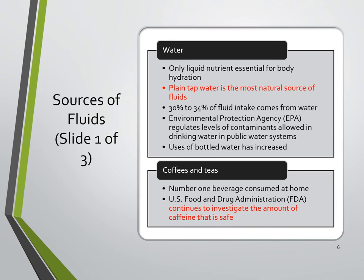Coffee is actually the number one beverage consumed at home. Along with tea, the FDA continues to investigate the amount of caffeine that is safe — this is an ongoing issue. Caffeine is considered a drug and a stimulant. The FDA has also issued warnings regarding teas that contain senna, aloe, buckthorn, and other plant-derived laxatives.